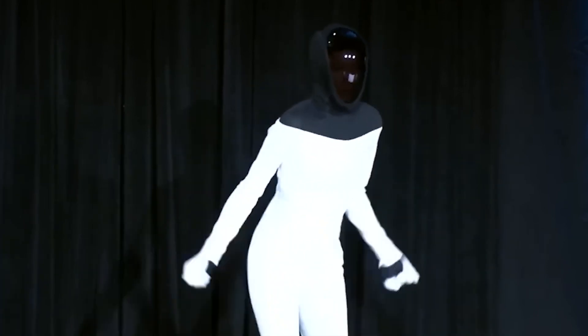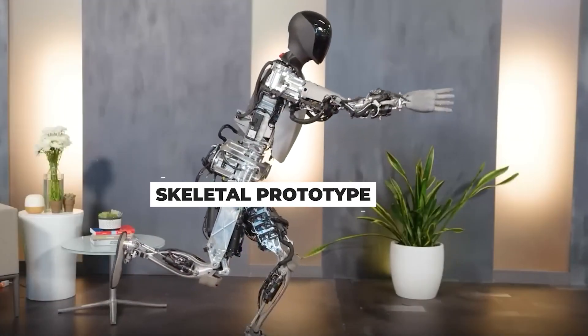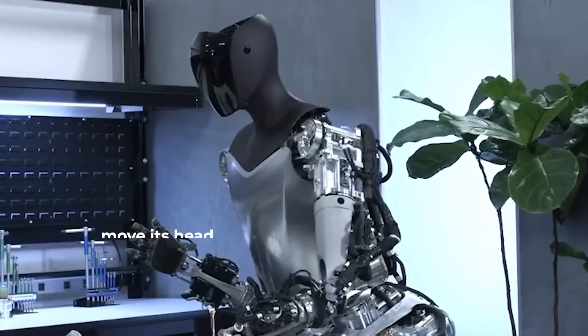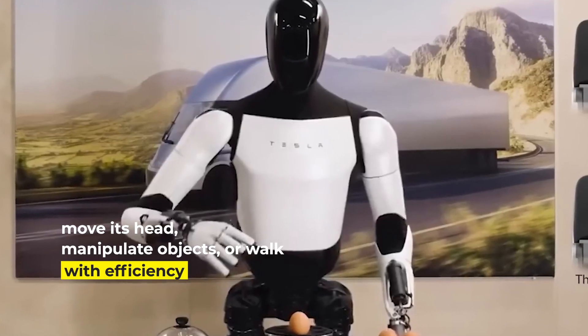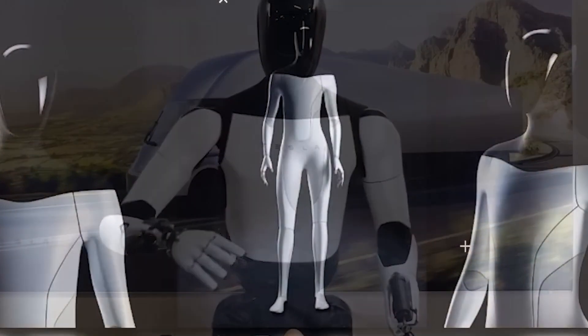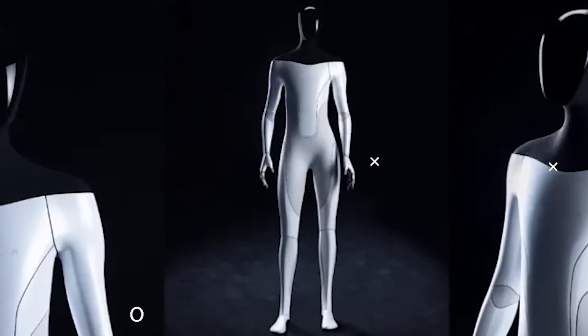The inception of Optimus Robot was marked by a skeletal prototype that lacked fundamental functionalities such as the ability to move its head, manipulate objects, or walk with efficiency. However, this rudimentary reveal served a crucial purpose.